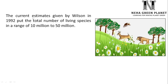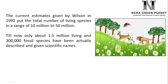As estimated by the famous scientist Wilson in 1992, it is predicted that on earth we have around 10 million to 50 million species — a really huge number. However, we have explored only a few of them; we know about only 1.5 million living species and around 3 lakh fossil species for which scientific analysis has been done and names have been assigned.